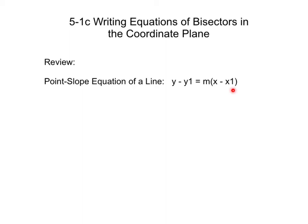Looking at an example of what that means: if we had the equation y minus 3 is equal to 2 times the quantity x minus 1, what this means is that y sub 1 and x sub 1 is a point that this line goes through. So this point would be x coordinate 1 and y coordinate 3.